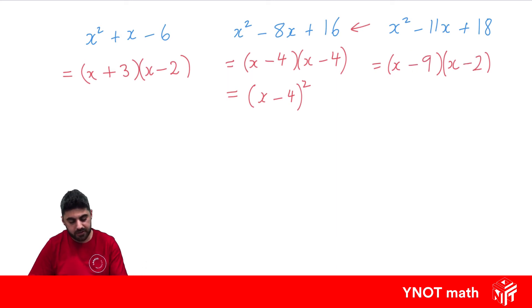Because -9 × -2 gives us positive 18, and -9 + -2 gives us -11.